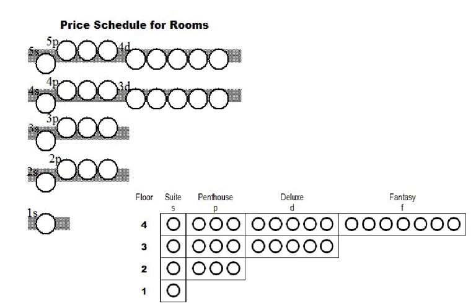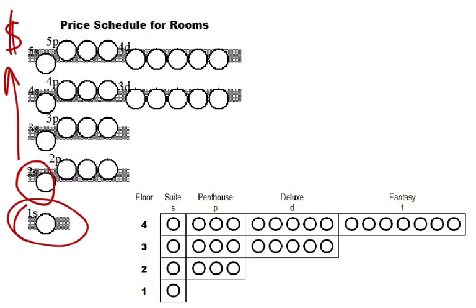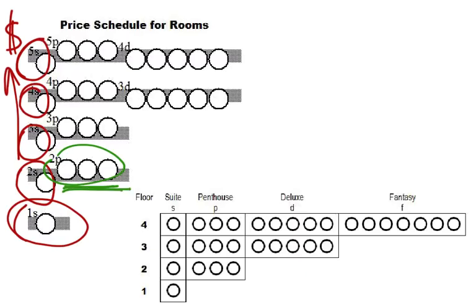A really important part of this is the idea that the rooms cost different amounts. On the first floor you have the first floor suite. The second floor suite is exactly the same room but costs more — higher up, better view, less street noise. The third floor costs more than the second, the fourth more than the third, and so on. The penthouse-type rooms cost a little more than the suites on the same floor because they're just nicer rooms.